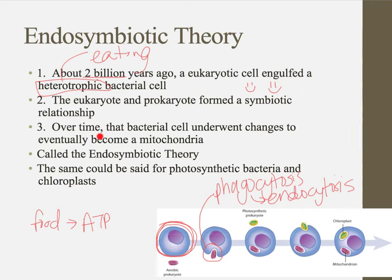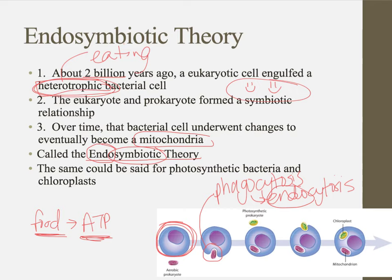Over time — and I mean millions of years — we think that this bacterial cell inside the eukaryote underwent slight changes to eventually become a mitochondria. We know it became a mitochondria because it was heterotrophic, converting food energy into energy in the form of ATP. This came to be known as the endosymbiotic theory: 'endo' like endocytosis meaning inside the cell, 'symbiosis' meaning a mutually beneficial relationship. That's how eukaryotes came about — two things living together, one inside the other.